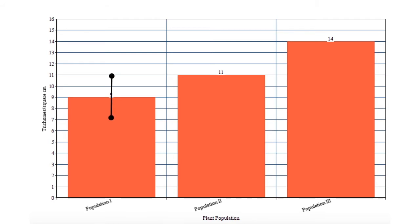Here is the bar that represents the standard error of the mean. The standard error is 1 and we want to make an interval of two standard errors above and below the mean. So for population 1 the bar goes from 7 to 11 because the sample mean was 9. That bar from 7 to 11 represents a 95% confidence interval for the true mean trichomes per square centimeters of all the plants in that population. We do the same for populations 2 and 3.